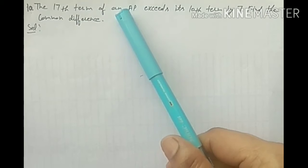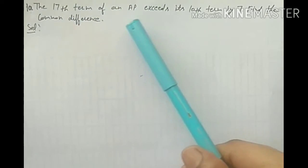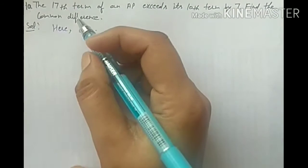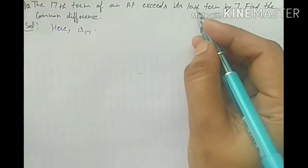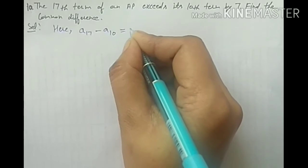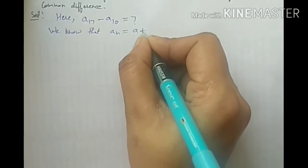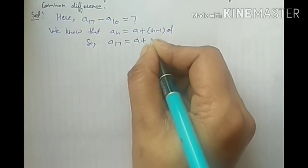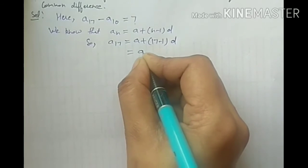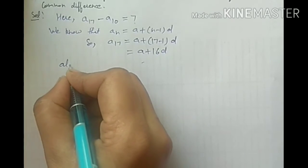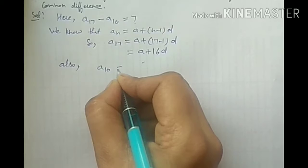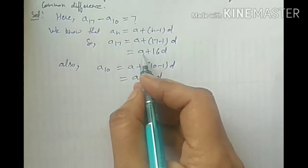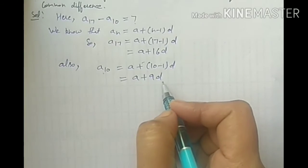Question number 10: given AP की जो 17th term है, वो 10th term से 7 ज्यादा है। हमें common difference d find out करना है। Here A17 and A10 का difference is 7. We know that AN = A plus N minus 1 into D. So A17 = A plus 16D, and A10 = A plus 9D.